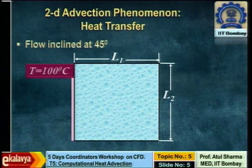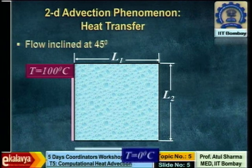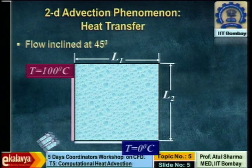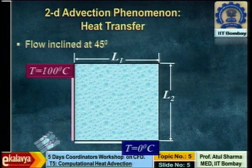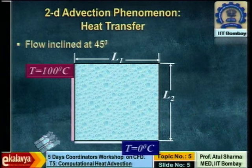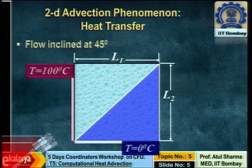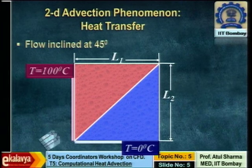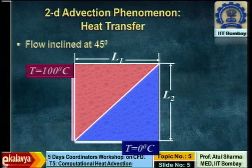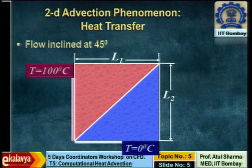Let us take flow inclined at an angle of 45 degrees. The left wall is at 100°C and the bottom wall is at 0°C. The plate is square and the flow is inclined at 45 degrees. The fluid hitting the left boundary carries temperature 100, and the fluid hitting the bottom boundary carries temperature 0. The analytical solution is: below the diagonal it is 0, above the diagonal it is 100. We will use this problem as a test problem because we know this is the exact solution for pure advection.